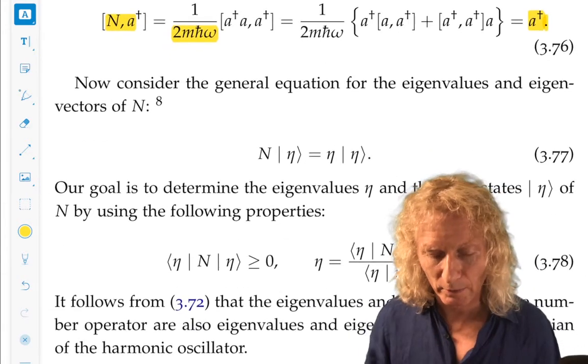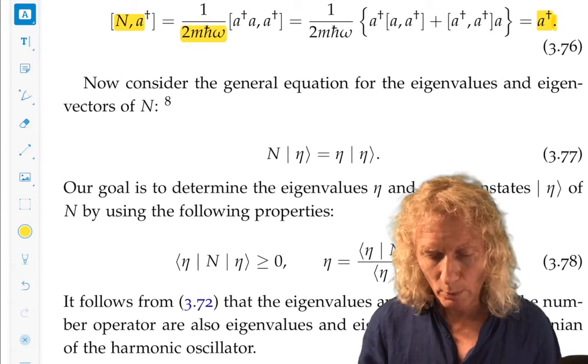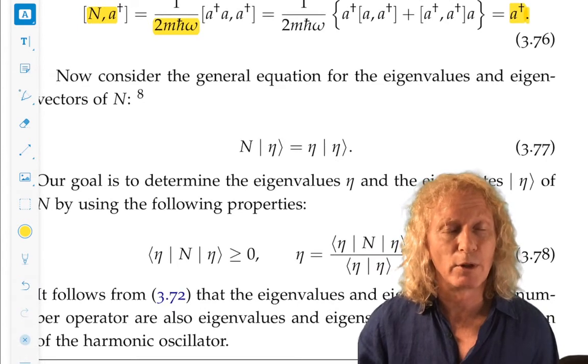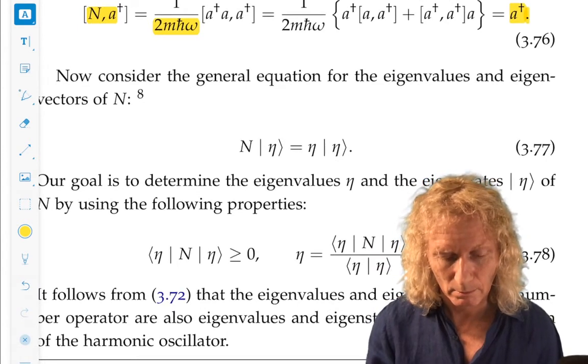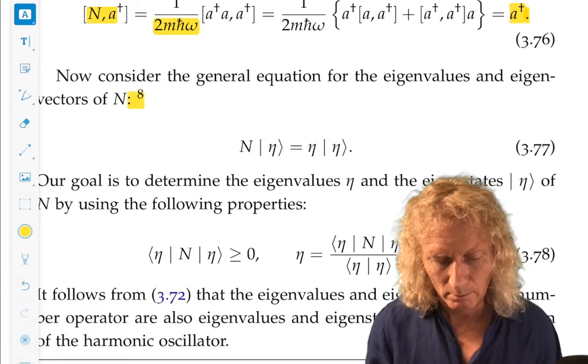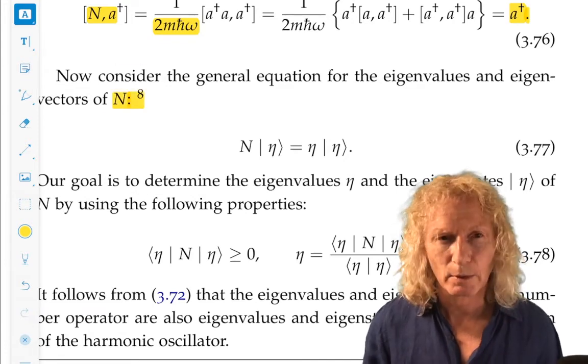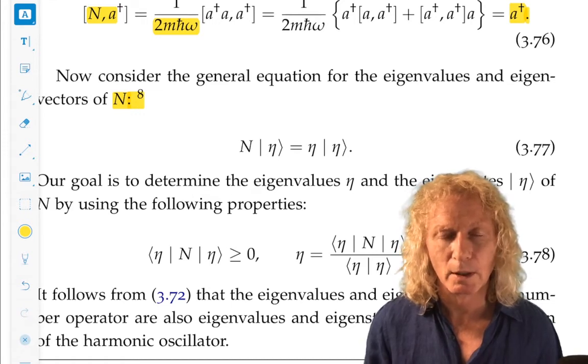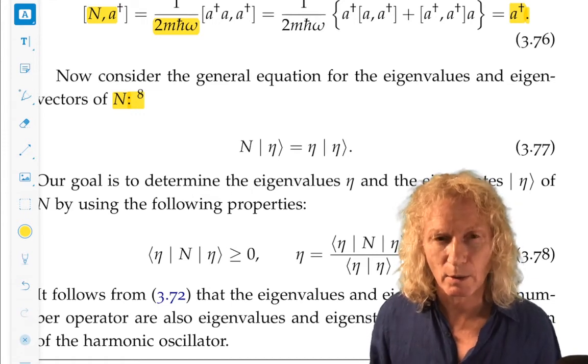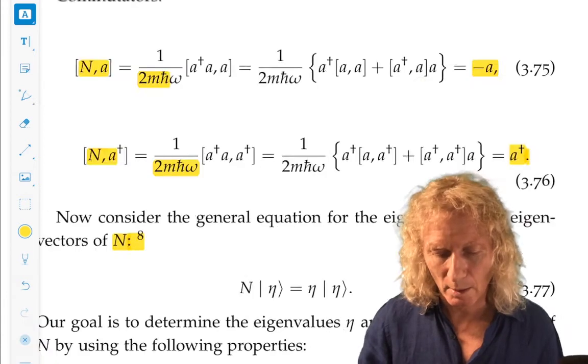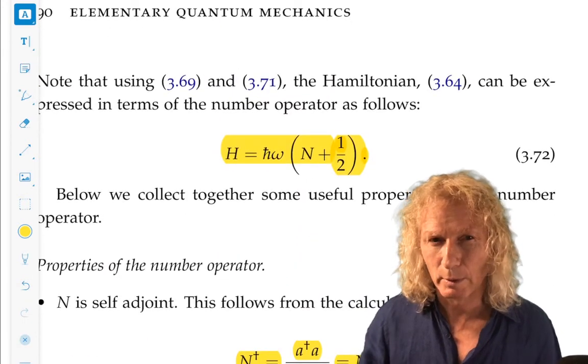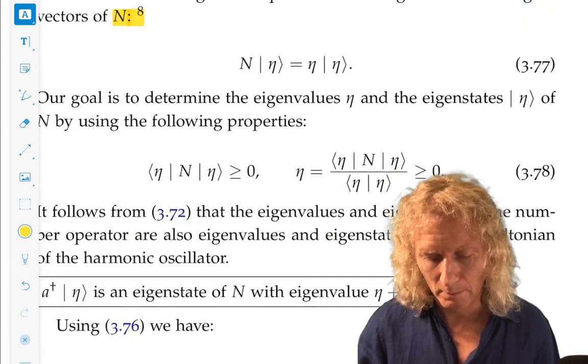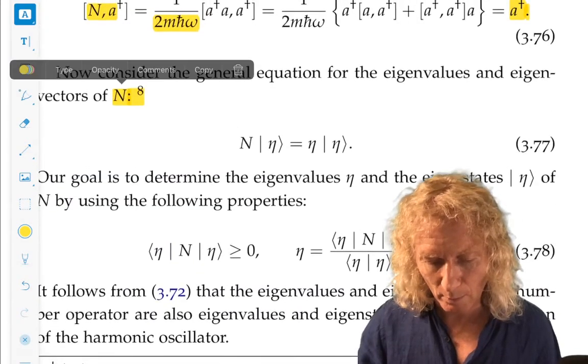Okay. Now this is a little bit of a slick notation here. We want to consider the general equation for the eigenvalues and eigenvectors of the number operator N. But you say, wait. I thought you wanted to find the eigenvalues and eigenvectors of the Hamiltonian. Yes. But remember, going back to the top, the number operator was very closely related to the Hamiltonian. We'll come back to that in a second. So now we derive these properties of the number operator.